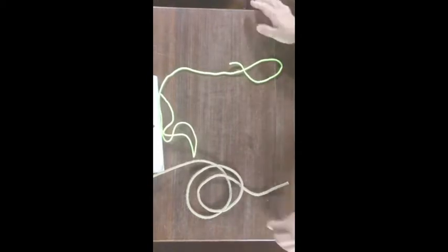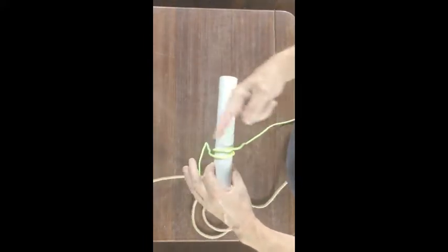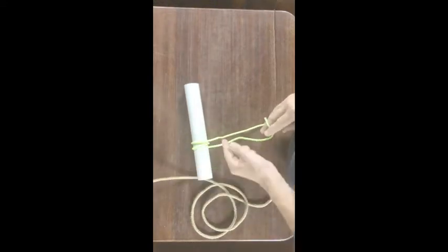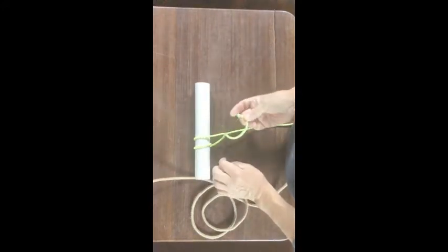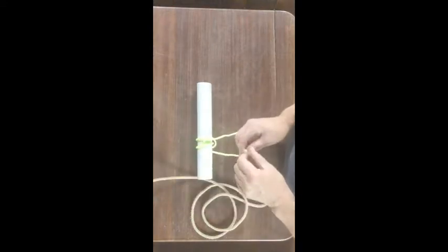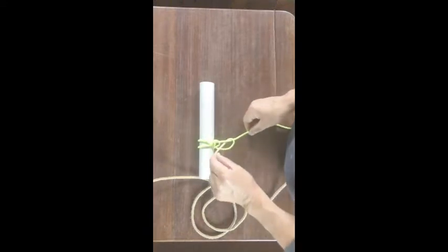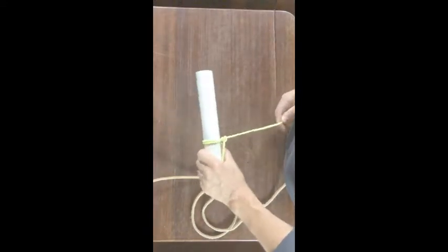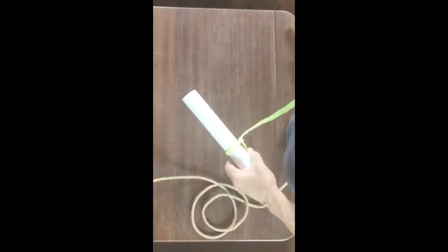So first of all, round turn and two half hitches used when you want to tie a rope to something or something round. Go around, go over the standing part of the rope which is that bit, this is the working end, and through that loop pull it up gently, go back over the rope through that loop, pull it up gently, cinch the rope up. There's the knot, cinch it up tight, round turn two half hitches.